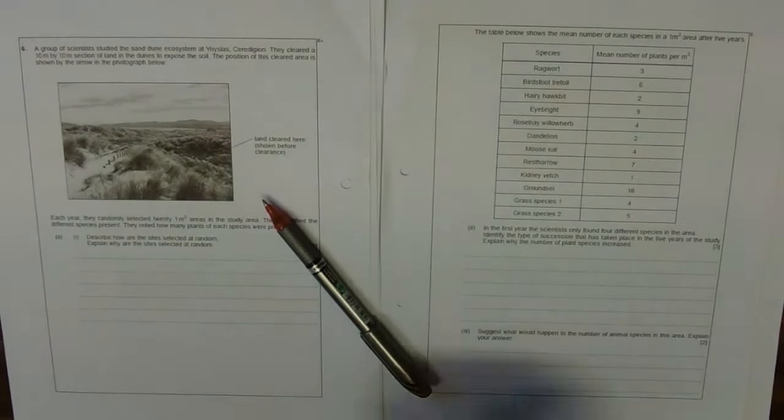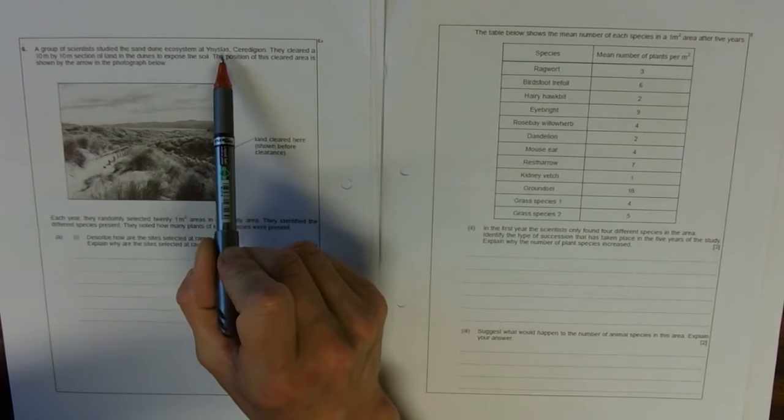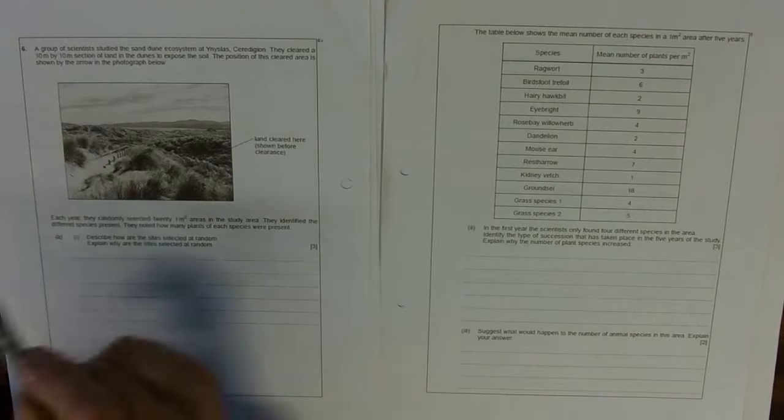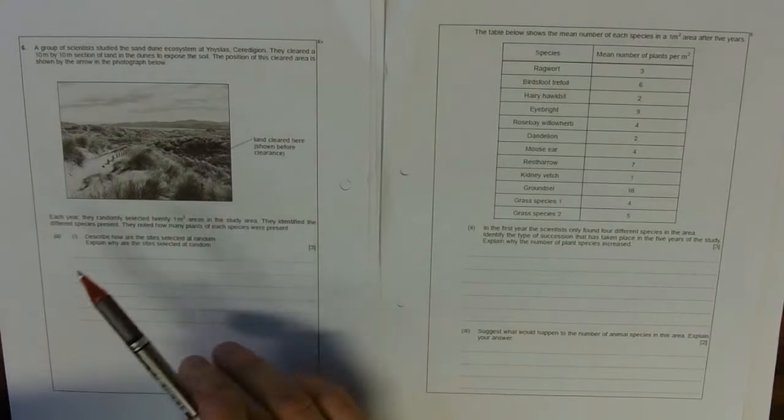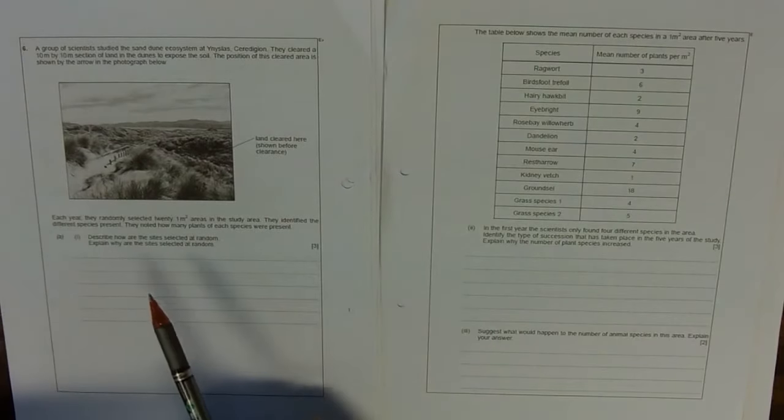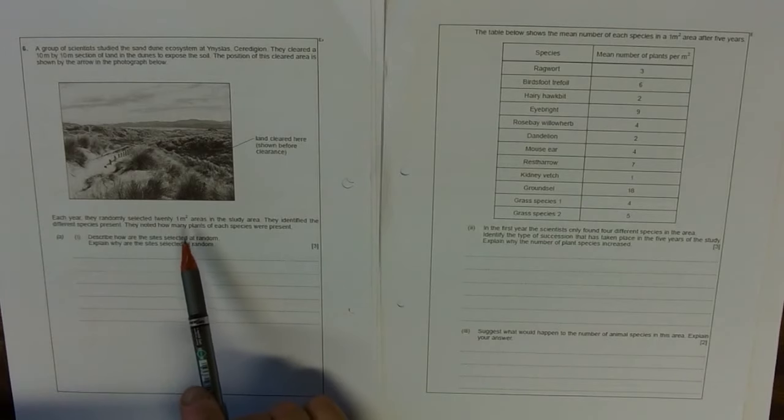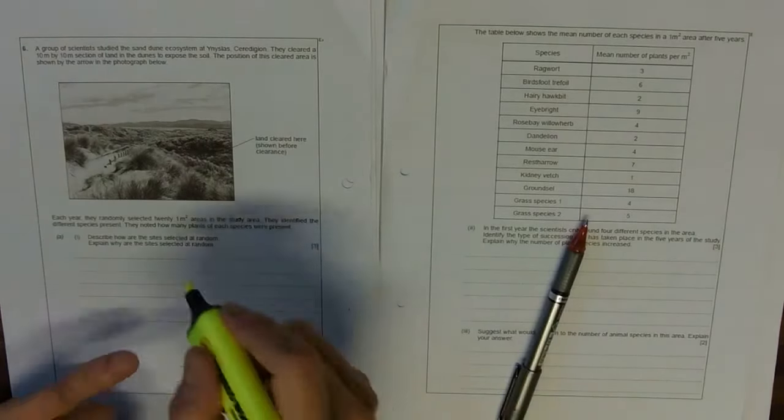A group of scientists studied the sand dune system at a place in Wales. They cleared a section of land and then studied it. They randomly selected 21m² areas and identified the different species present. Describe how the sites are selected at random.